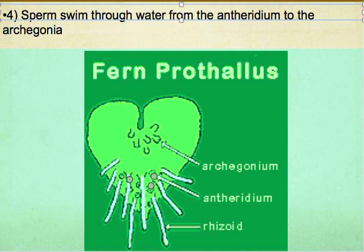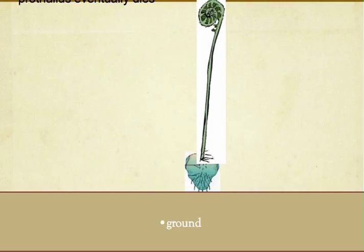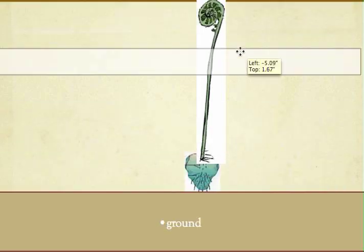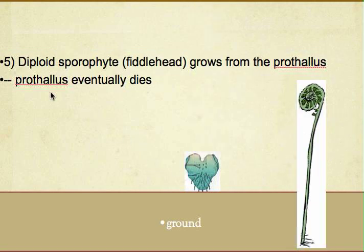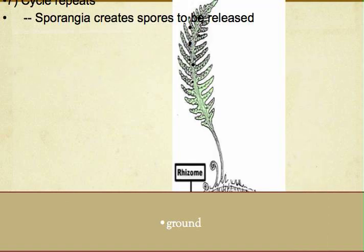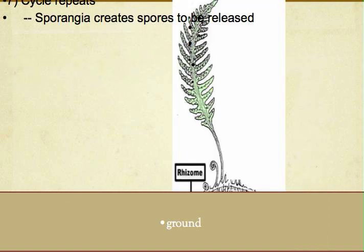This is when the plants go into the process of fertilization. The diploid sporophyte, which is the fiddlehead, grows from the prothallus. The prothallus eventually dies.